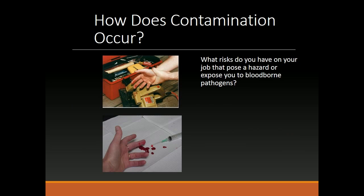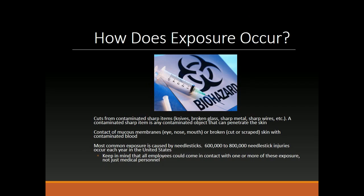How does contamination occur? How does exposure occur? Cuts from contaminated sharp items — knives, broken glass, sharp metal, sharp wires, etc. A contaminated sharp item is any contaminated object that can penetrate the skin.